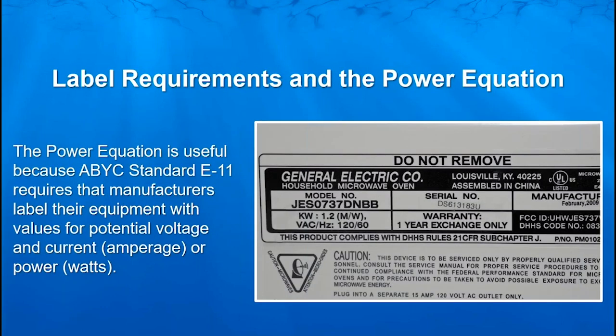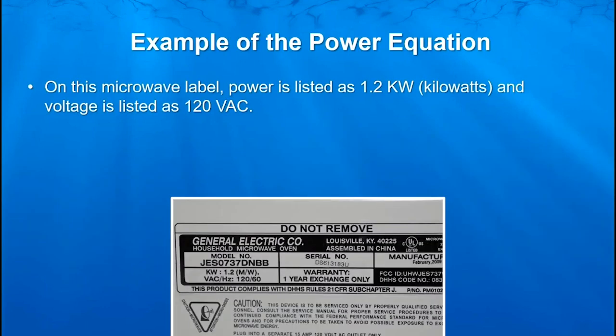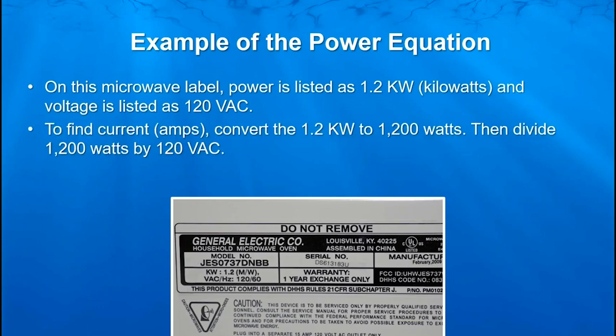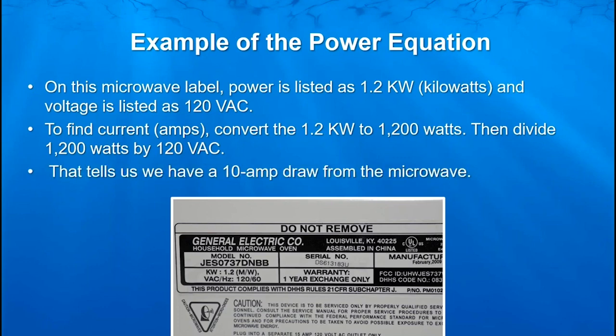This equation is very useful because ABYC standard E11 requires all manufacturers to label their equipment with values for potential voltage and current or power. So on this microwave label, power is listed at 1.2 kilowatts and the voltage is 120 volts. To find the current — the amperage — we're going to convert that 1.2 kilowatts to 1,200 watts, since 1 kilowatt equals 1,000 watts. Then divide the 1,200 watts by 120 volts, and that tells us we have a 10-amp draw from the microwave.